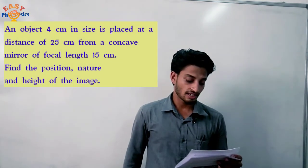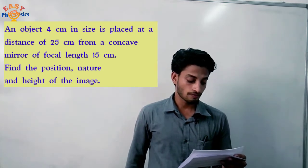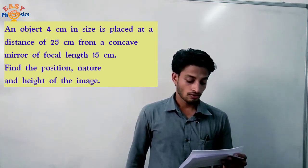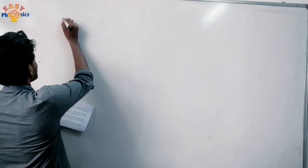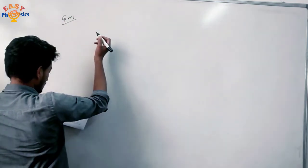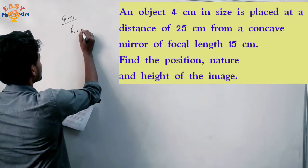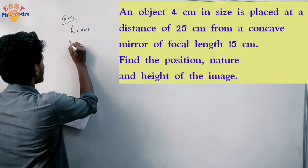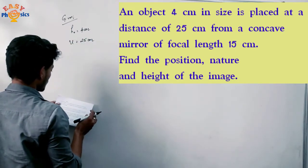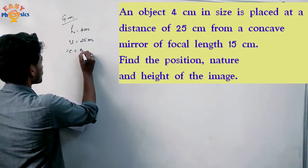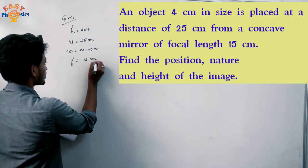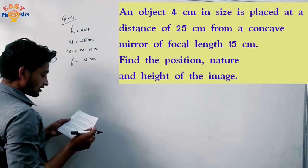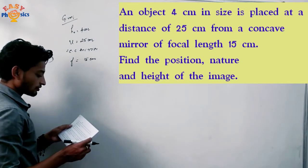First problem: an object 4 centimeters in size is placed at a distance of 25 centimeters from a concave mirror of focal length 15 centimeters. Find the position, nature, and height of the image. Given: object size is 4 centimeters, placed at a distance of 25 centimeters, concave mirror with focal length 15 centimeters.